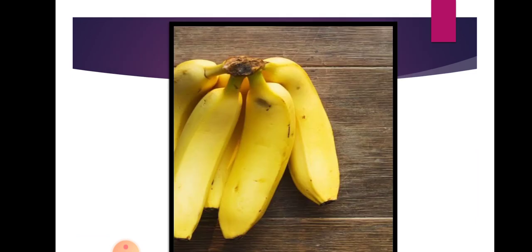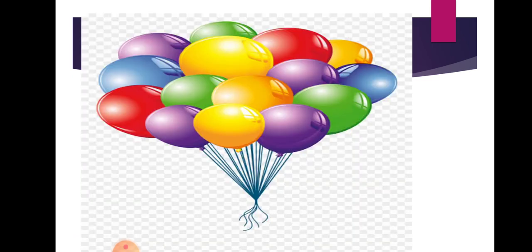And what is this? B — Banana. Which fruit is this? Banana. B — Banana. Yes, it is yellow in color. Which color? Yellow in color. B — Banana. Very good.